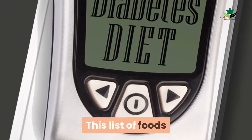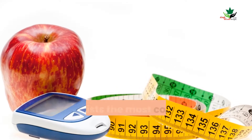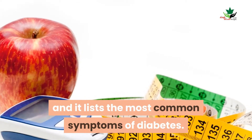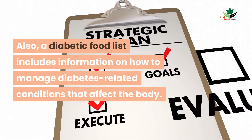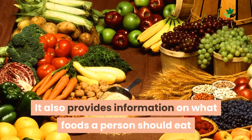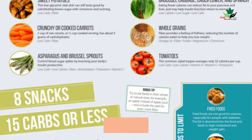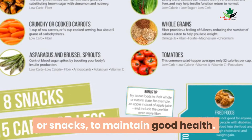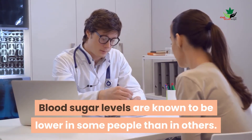A diabetic food list includes information on how to manage diabetes-related conditions that affect the body. It also provides information on what foods a person should eat and avoid at certain times, such as meals or snacks, to maintain good health. Blood sugar levels are known to be lower in some people than in others.